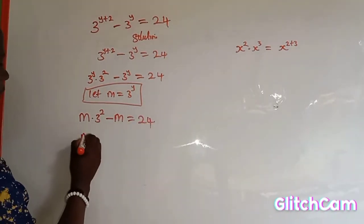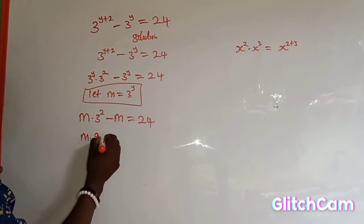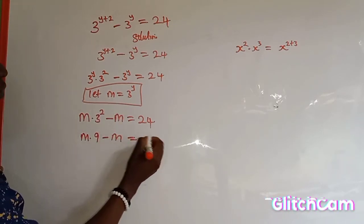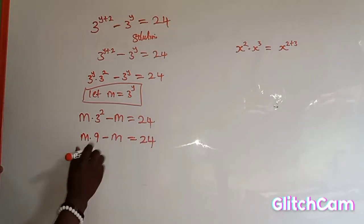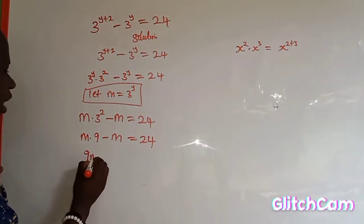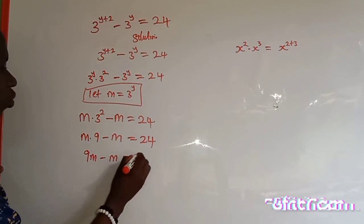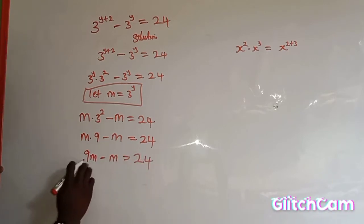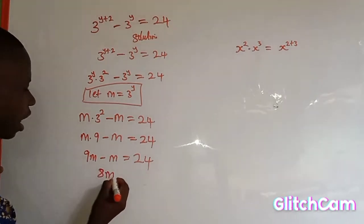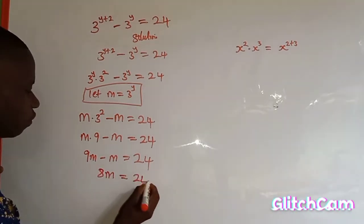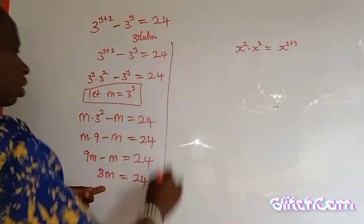So m multiplied by 3 to the power of 2 — which is 9 — minus m, is equal to 24. That gives us 9m minus m, which is equal to 24. And 9m minus m gives us 8m equal to 24.